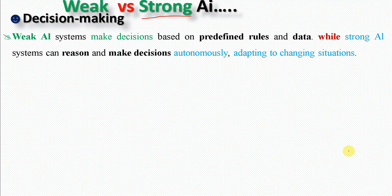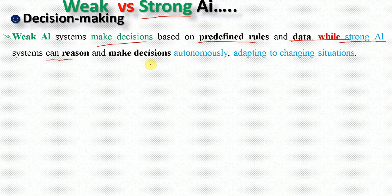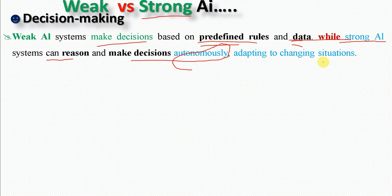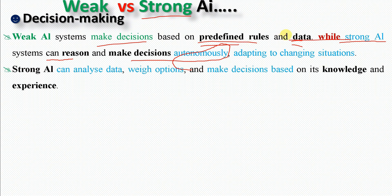The second difference is decision making. Weak AI makes decisions based on predefined rules and data. Strong AI, in contrast, can reason and make decisions autonomously — independently — without predefined rules, adapting depending on the situation, problem, or environment.